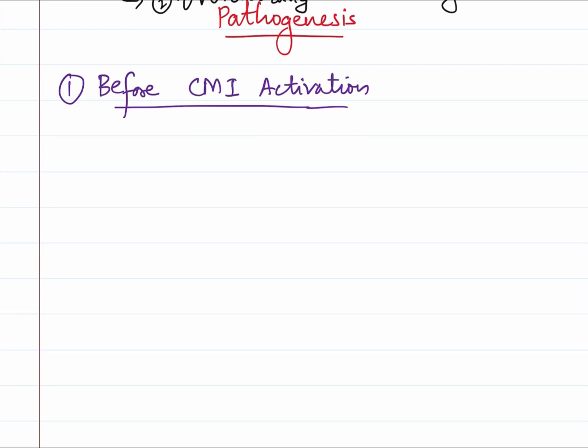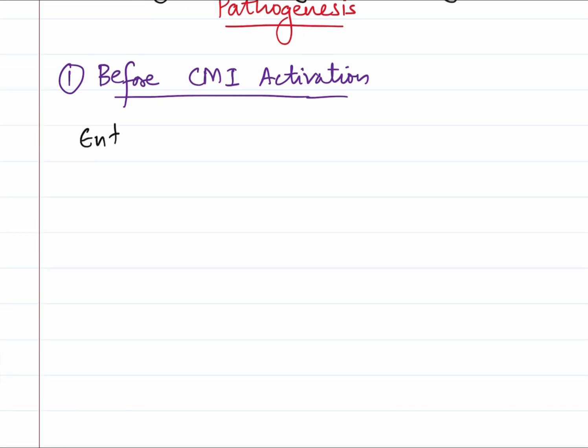With that, we move on to the pathogenesis. It occurs in two phases: one before the activation of cell-mediated immunity, and what happens after the activation. Cell-mediated immunity controls the infection - when CMI is active, the infection is contained. Whereas if CMI is weak or if the bacilli are virulent enough to overcome host immunity, infection will progress to active disease. The bacillus enters through droplet nuclei by aerosol entry.